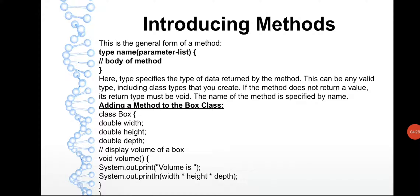The type specifies the type of data returned by the method. This can be any valid type — int, char, float, double, anything. The return type means what value will be returned by that method. If you go for void, that means the method will not return anything to the calling instruction. If the method does not return a value, the return type must be void.